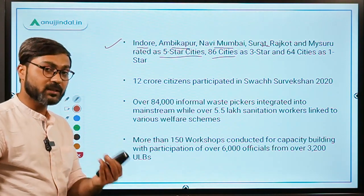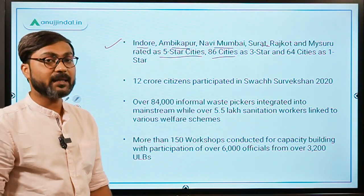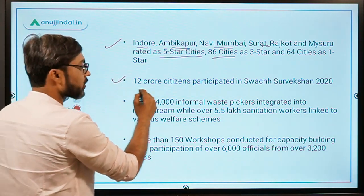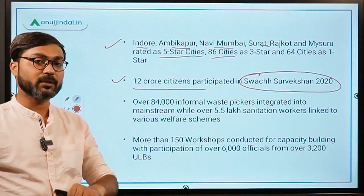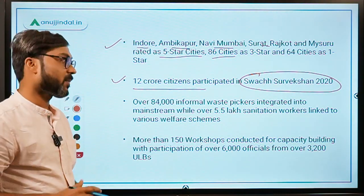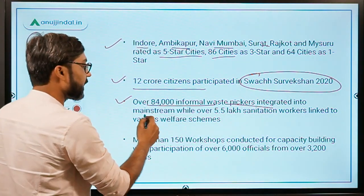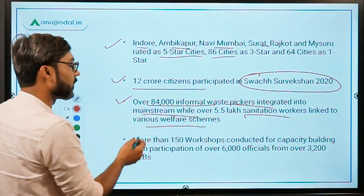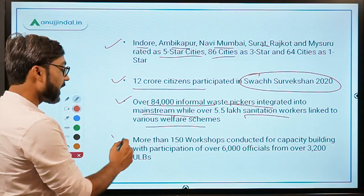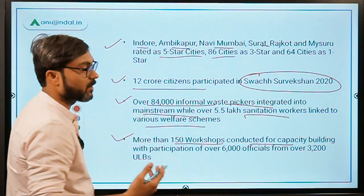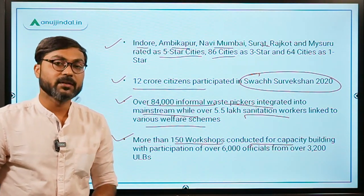86 cities received 3-star ratings and 64 cities were ranked as 1-star cities. 12 crore citizens participated in Swachh Survekshan 2020. Over 84,000 informal waste pickers were integrated into the mainstream, while over 5.5 lakh sanitation workers were linked to various welfare schemes. More than 150 workshops were conducted for capacity building by the Ministry of Housing and Urban Affairs.